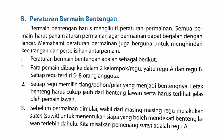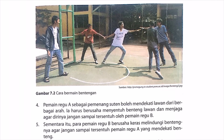Tiga, sebelum permainan dimulai, wakil dari masing-masing regu melakukan suiten atau suit untuk menentukan siapa yang boleh mendekati benteng lawan terlebih dahulu. Kita misalkan pemenang suiten adalah regu A. Empat, pemain regu A sebagai pemenang suiten boleh mendekati lawan dari berbagai arah. Ia harus berusaha menyentuh benteng lawan dan menjaga agar dirinya jangan sampai tersentuh oleh pemain B. Lima, sementara itu para regu B berusaha keras melindungi bentengnya agar jangan sampai tersentuh.